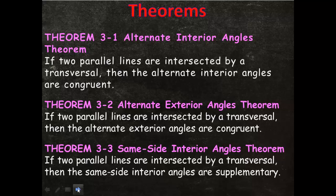The first three theorems we're looking at today are: Theorem 3-1, the Alternate Interior Angles Theorem — if two parallel lines are intersected by a transversal, then the alternate interior angles are congruent. Theorem 3-2, the Alternate Exterior Angles Theorem — if two parallel lines are intersected by a transversal, then the alternate exterior angles are congruent. And Theorem 3-3, the Same-Side Interior Angles Theorem — if two parallel lines are intersected by a transversal, then the same-side interior angles are supplementary.